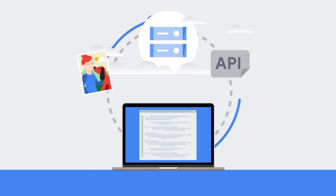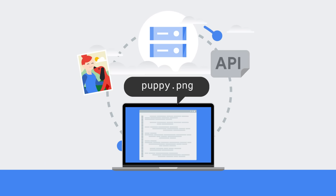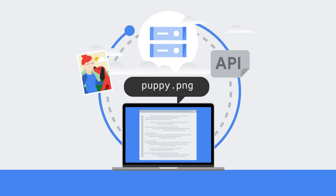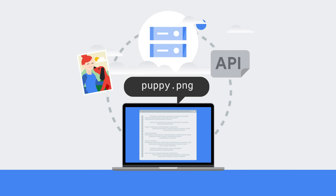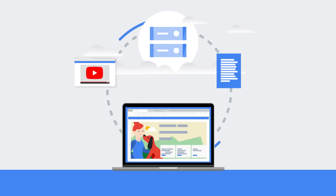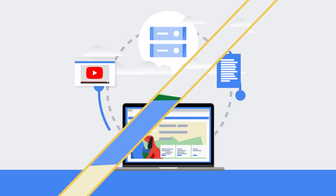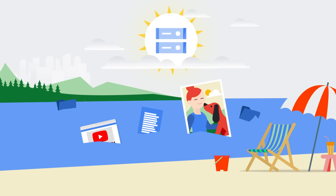Once you have stored the data, accessing it is easy with a single API call for all the storage classes. Cloud Storage is optimal to use for hosting static websites, streaming, and storing documents. It is widely used for backups and archives, and it is a great data lake choice for big data and ML.